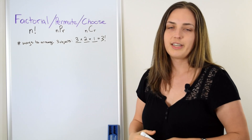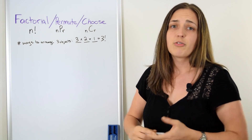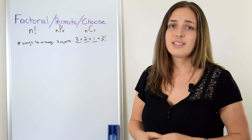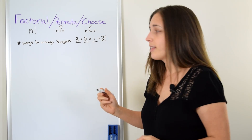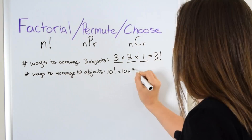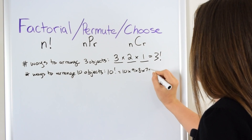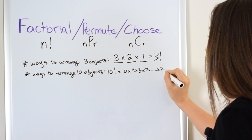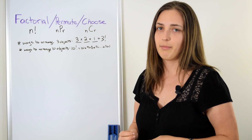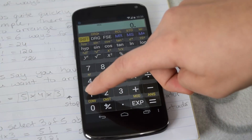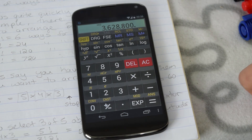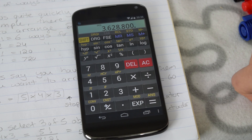You can do 3 times 2 times 1 in your head, but if you're thinking about 10 objects and you want to arrange them in any possible way, that's 10 factorial — which is 10 times 9 times 8 times 7 times 6 times 5 times 4 times 3 times 2 times 1. You don't really want to type all those numbers, and that's why we have the factorial button. So you type 10, then shift and factorial, and that's the answer for the number of ways to arrange 10 different objects in a row.